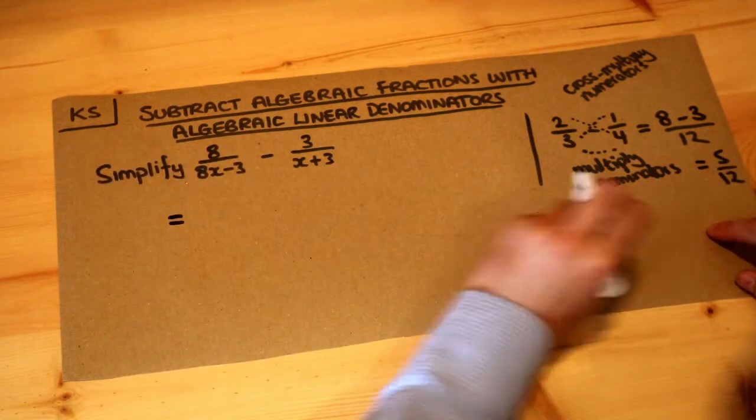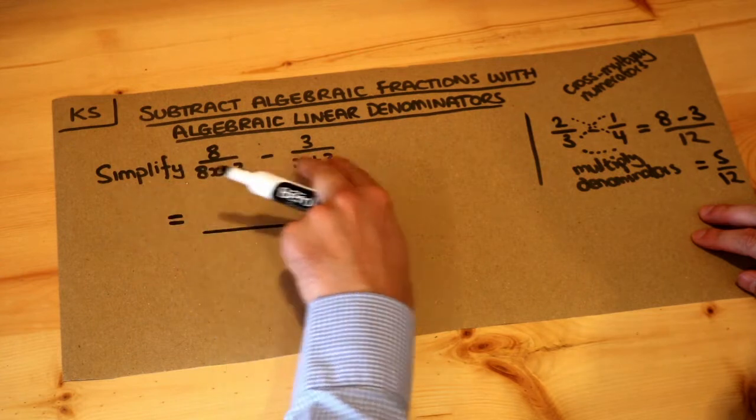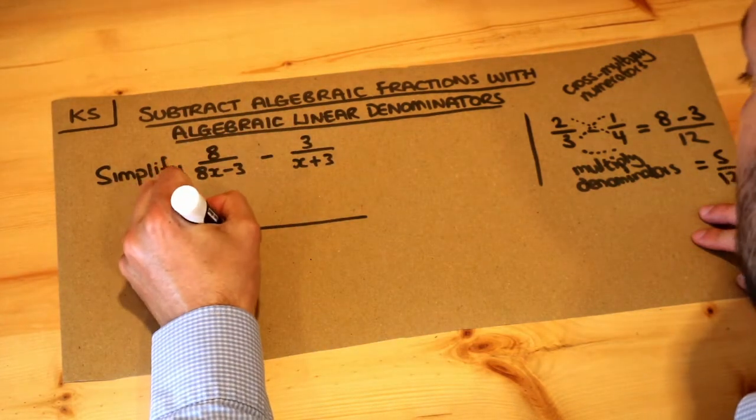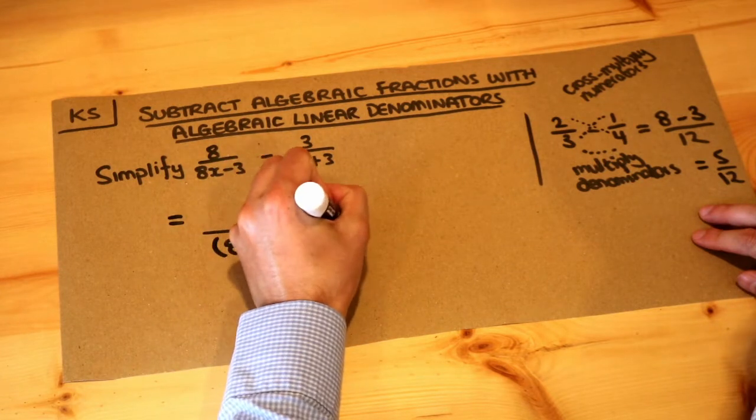So we're going to multiply the denominators. So we can just leave as two brackets: (8x - 3) times by (x + 3). Never use the times symbol in algebra. Always use brackets to multiply two things together.